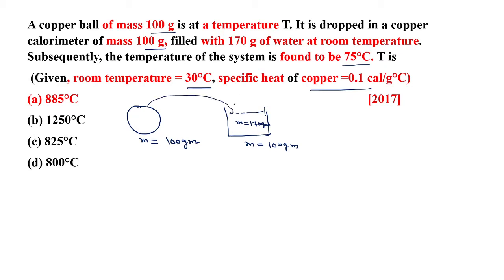We drop the copper ball into the calorimeter. What will happen is the temperature of the copper ball will decrease, and the temperature of the calorimeter and the liquid will both increase. They will come to a common temperature, which according to the question is 75 degree centigrade. The initial temperature of the copper ball was t. According to the principle of calorimetry, heat lost equals heat gained.